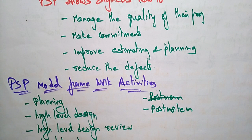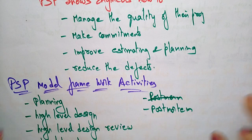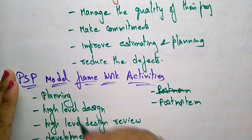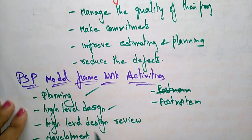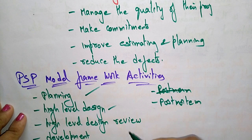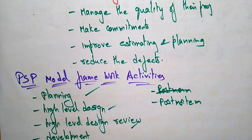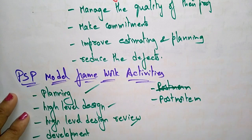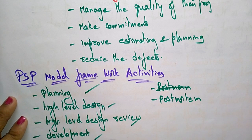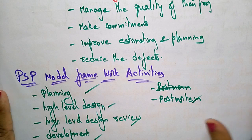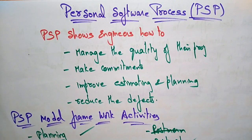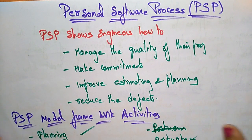So these are the activities in the Personal Software Process: first Planning, then High Level Design, then High Level Design Review where formal verifications address uncovered errors, then Development, and finally Post Mortem. This is about the Personal Software Process. Thank you.